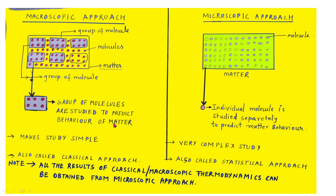In the microscopic approach, each and every molecule of matter is studied separately. By analyzing the behavior of each and every molecule, we predict the behavior of the matter — properties like pressure, temperature, density, energy, entropy, etc. Such type of study is made in the microscopic approach, and it is sometimes also called statistical thermodynamics, where a conclusion is made by taking into account the statistical average of all the individual molecules of the system.